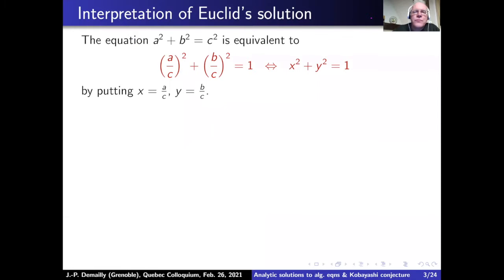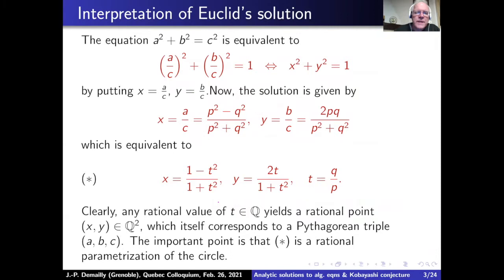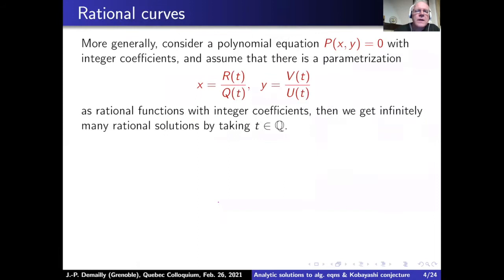You can immediately reinterpret this in terms of analytic curves, because the curve involved — if you divide by C² — gives the circle x² + y² = 1. Dividing A by C and B by C, and reparametrizing by the ratio T = Q/P, you get one of the standard parametrizations of the circle, which is a complex analytic solution if you allow x and y to be complex numbers. Taking T to be rational gives many rational points.